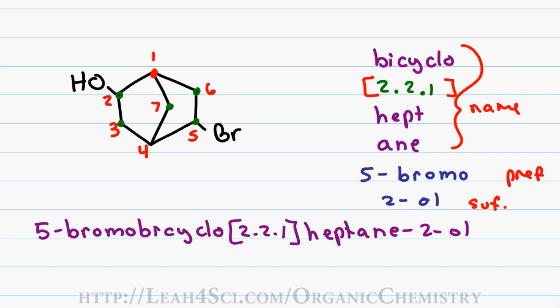When you have a name this complicated, it helps to use your puzzle pieces as a checklist to ensure you don't miss anything. I have my prefix 5-bromo, I have the start to my bicyclic compound, I have my first name and last name and finally I have my suffix.